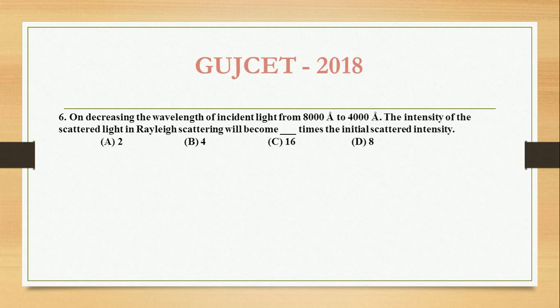On decreasing the wavelength of incident light from 8000 Angstroms to 4000 Angstroms, the intensity of the scattered light in Rayleigh scattering will become blank times the initial scattered intensity. The intensity of Rayleigh scattering and wavelength have a relation: intensity of Rayleigh scattering, I, is directly proportional to 1 over lambda raised to 4.